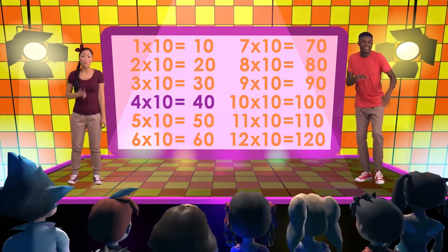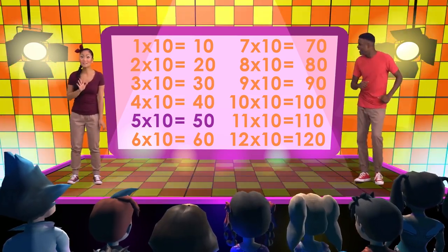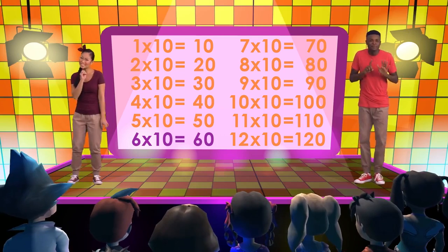While 4x10 is 40. 5x10 is 50. 6x10 is 60.